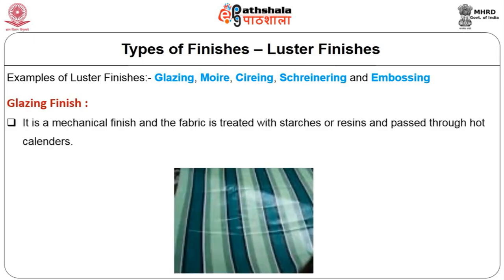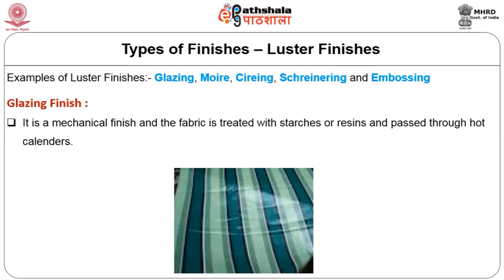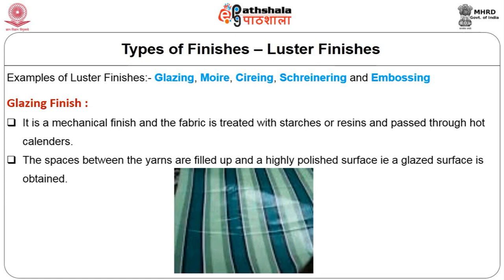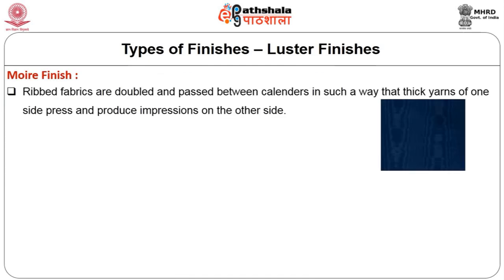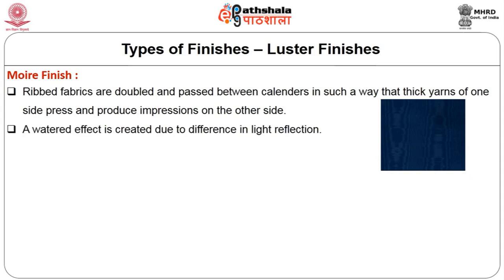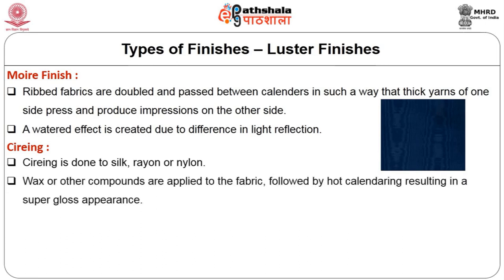Glazing is a mechanical finish where the fabric is treated with starches or resins and passed through hot calendars. The spaces between yarns are filled up and a highly polished — glazed — surface is obtained. In moiré finish, ribbed fabrics are doubled and passed between calendars so that the thick yarns of one side press and produce impressions on the other side, creating a watered effect due to difference in light reflection. Schreiner is done to silk, rayon or nylon — wax or other compounds are applied followed by hot calendaring, resulting in a super gloss appearance.